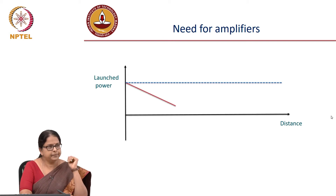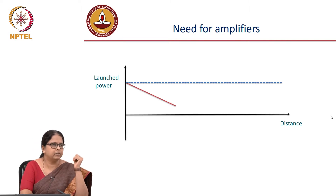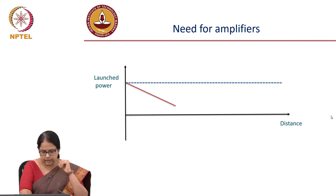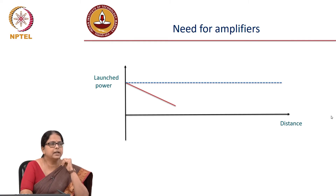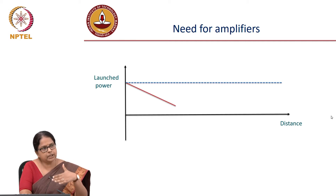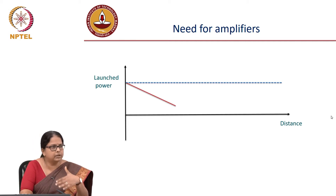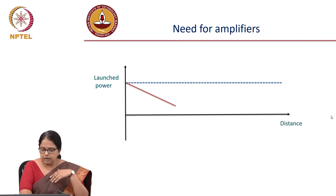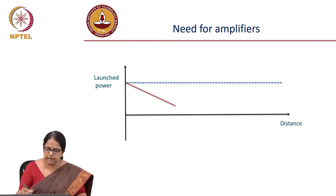The power starts dropping and the rate at which it drops is given by 0.2 dB per kilometer. There could be additional splice losses and connector losses, but considering all that, let us say the power drops to a certain value. The question is by how much can you allow the power to drop, and what decides this minimum point?